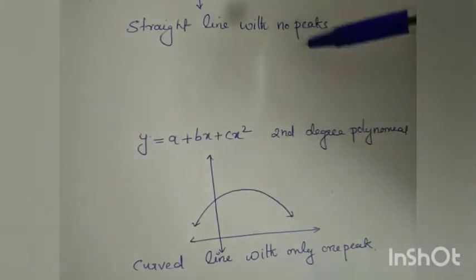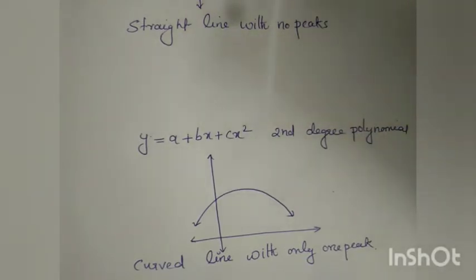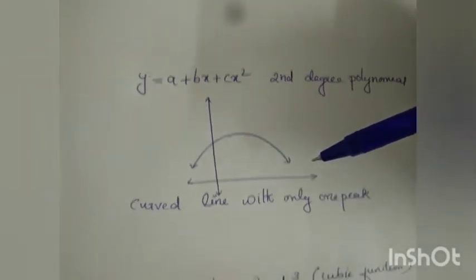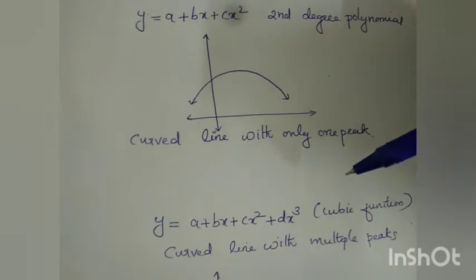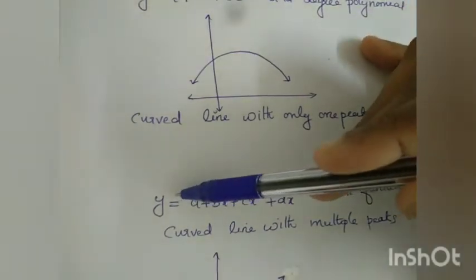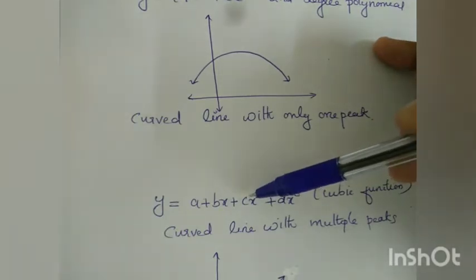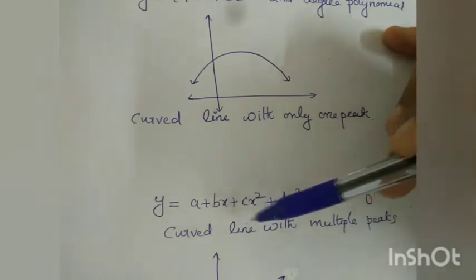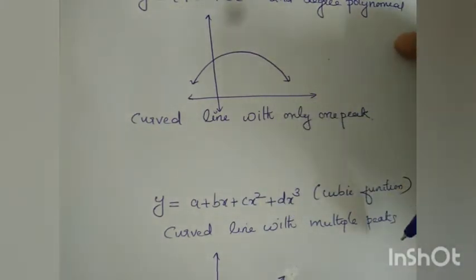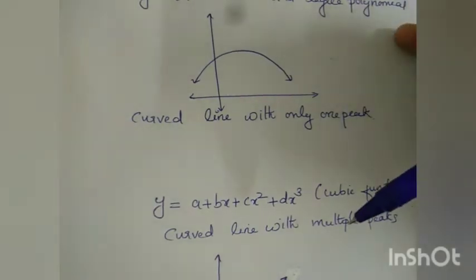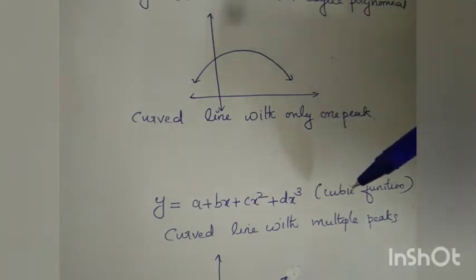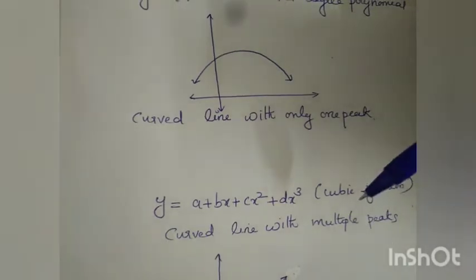The difference between first and second degree polynomial is that the first degree polynomial is a straight line and the second degree polynomial is a curve with one peak. The third order polynomial can be represented as y equals a plus bx plus cx squared plus dx cubed. It is called a cubic function or third order polynomial, and it is a curve with more than one peak.